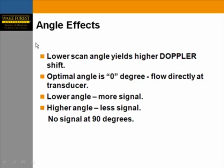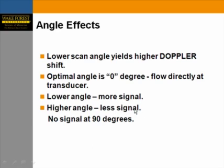The angle of inclination is also important. A lower scan angle gives the best or highest Doppler shift. The optimal angle is zero degrees — the lower the angle, the better the signal; the higher the angle, the worse the signal. At 90 degrees, you get no signal or Doppler shift.